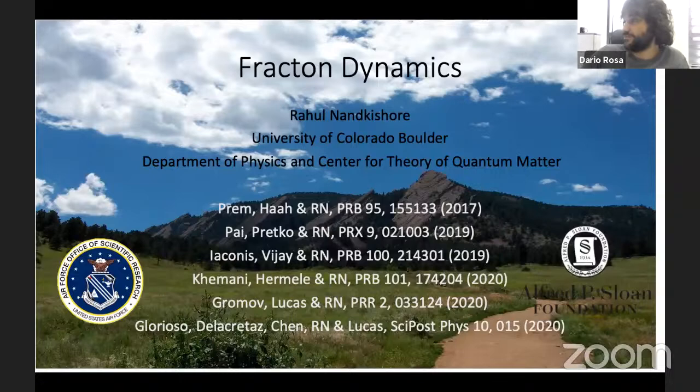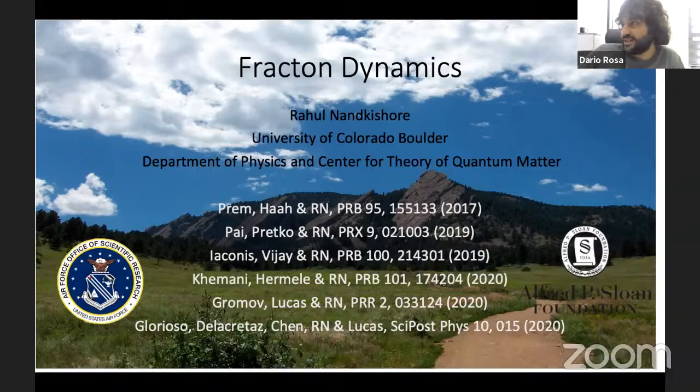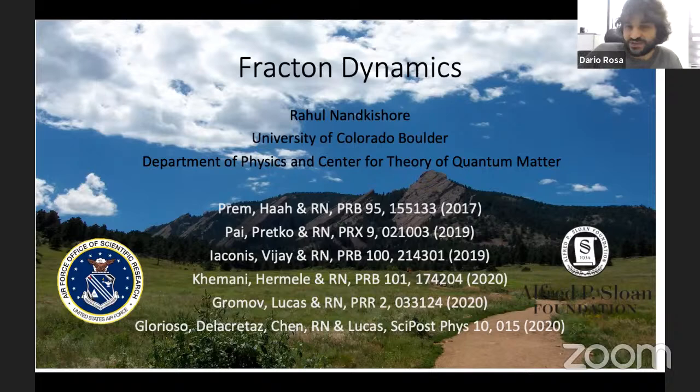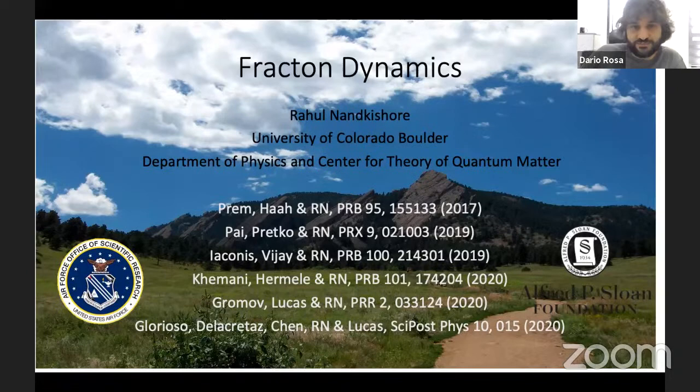Let me introduce the speaker. He got his PhD from MIT in 2012 with a thesis about quantum many-body physics in single and bilayer graphene. After that, he moved to Princeton, where he stayed as a postdoctoral fellow for three years. And since then, he moved to Colorado Boulder, where he remained as an assistant professor and currently is an associate professor in physics. His research interests are rather broad, and his main contribution has been in many-body localization.